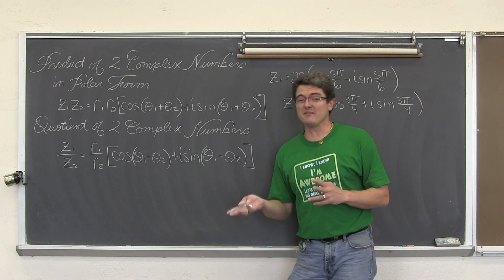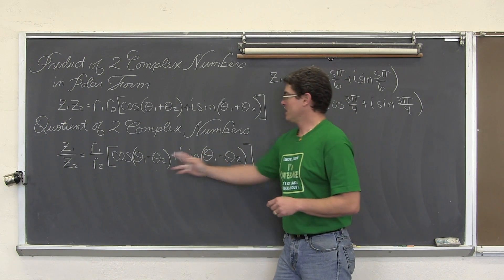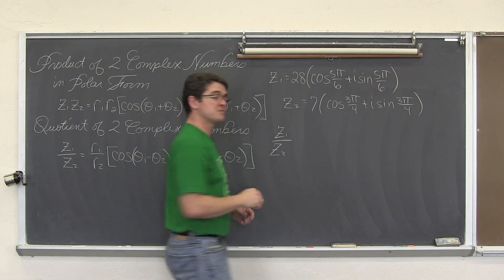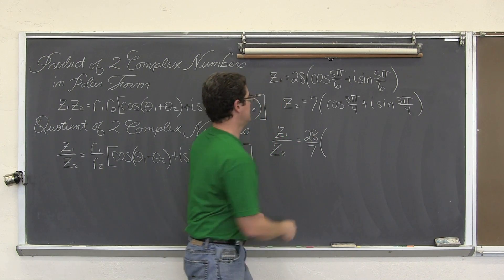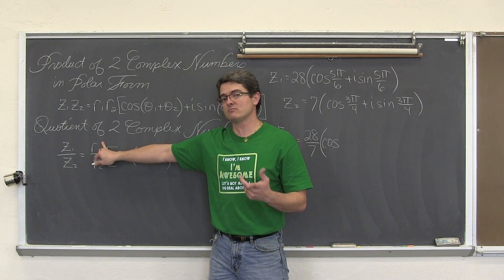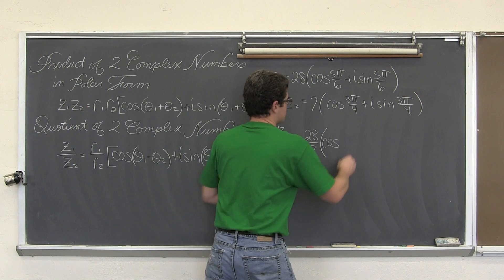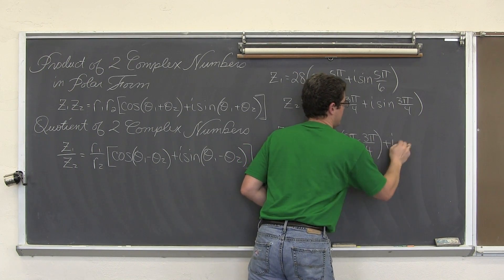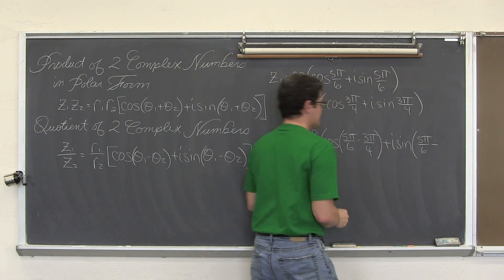Because 5 minus 3 is 2, and 3 minus 5 is negative 2. So z₁ divided by z₂ means we do 28 divided by 7, times the cosine of the angle from the numerator minus the angle from the denominator. That's 5π/6 minus 3π/4, plus i sine of those same two angles in proper order, 5π/6 minus 3π/4.